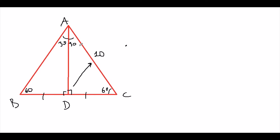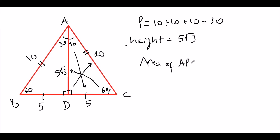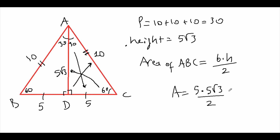If one side is given as 10: across 90° is 10, so across 30° is half of that, which is 5. Since all sides are congruent, the perimeter is 10 + 10 + 10 = 30. The height is across 60°, which is 5√3. The area of triangle ABC is (1/2) × base × height = (1/2) × 10 × 5√3 = 25√3/2 square units.